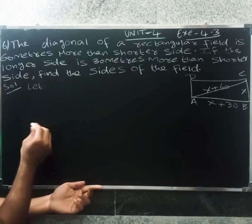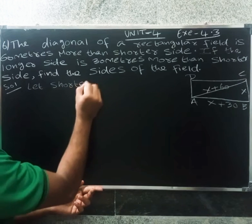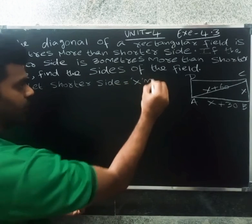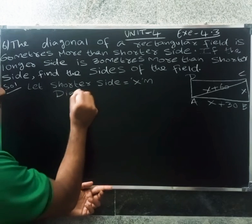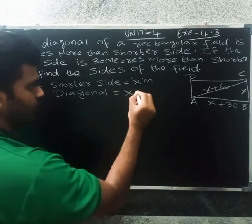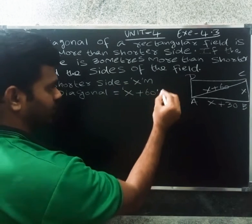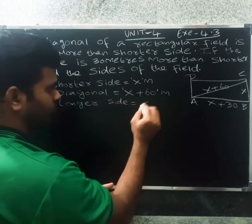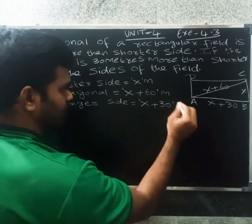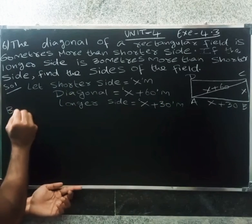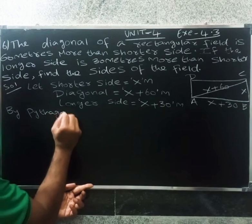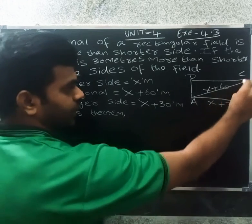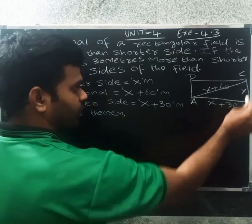Let the shorter side equal to x meters. So the diagonal equals x plus 60 meters, and the longer side equals x plus 30 meters.